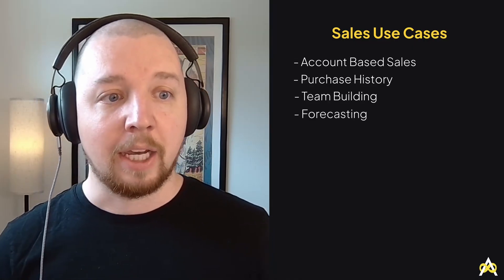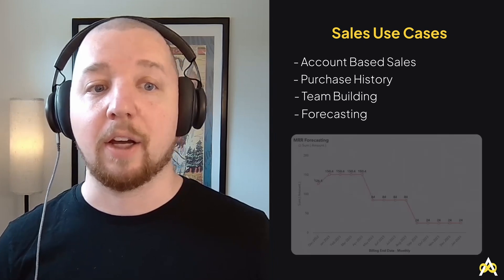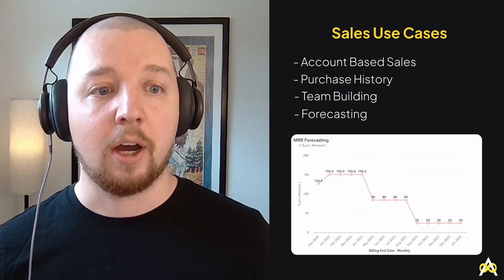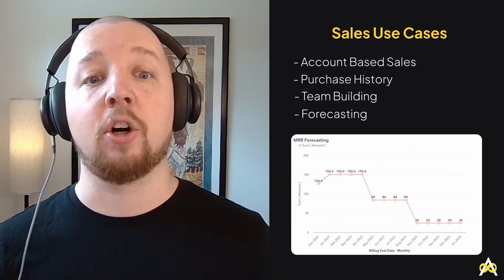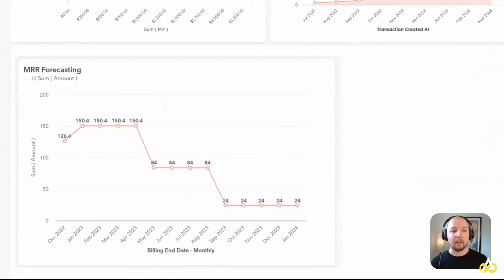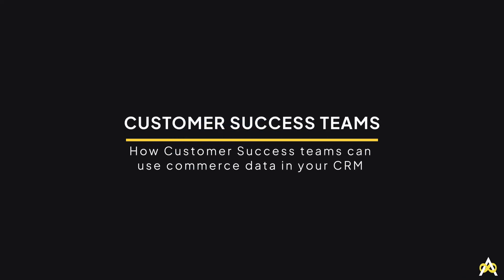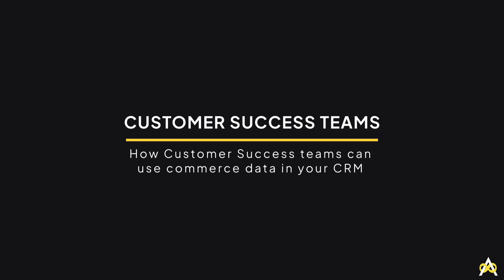The last and potentially most exciting way sales teams can use commerce data is for forecasting. Sales leaders not only need to know about incoming new revenue but also when recurring revenue is churning. By looking at contract end dates, you can see how future recurring revenue may drop off and set quotas accordingly to fill that gap and achieve your company goals.